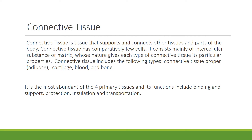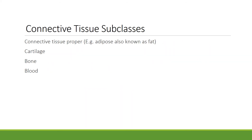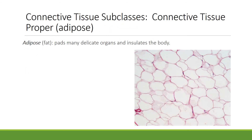The second type of tissue is connective tissue, and it is the most abundant of the four primary tissues. Its functions include binding, support, protection, insulation, and transportation. The subclasses we'll look at are connective tissue proper — with adipose tissue as our example — cartilage, bone, and blood. Adipose tissue, also known as fat, has a main job of padding many delicate organs and insulating the body. You can see the cells in the slide are filled with fat.